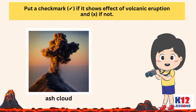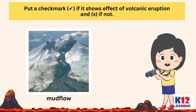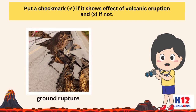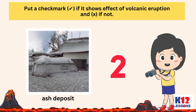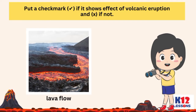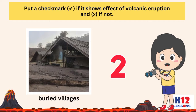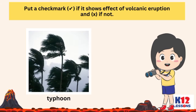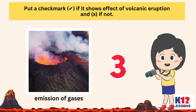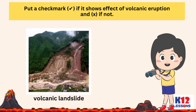Put a checkmark if it shows an effect of volcanic eruption, or X if not. The items shown are: Ash Cloud, Mud Flow, Ground Rupture, Ash Deposit, Lava Flow, Buried Villages, Typhoon, Emission of Gases, and Volcanic Landslide.